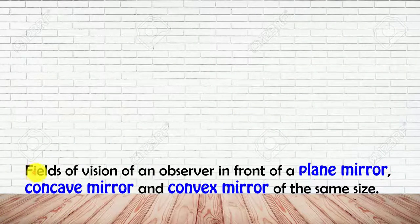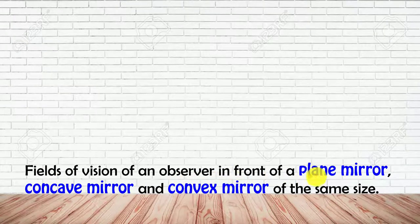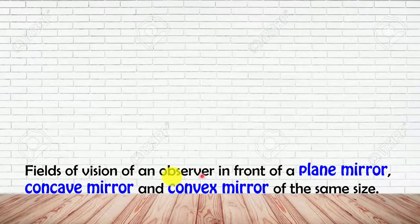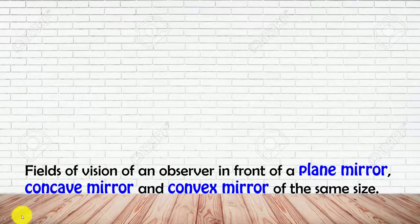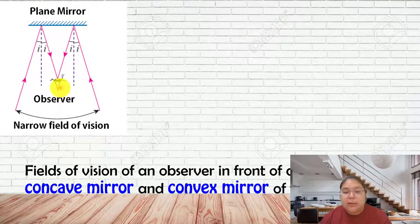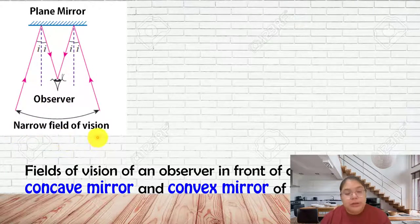Now we need to find out the field of vision of an observer in front of three types of mirrors of the same size: the plane mirror, concave mirror, and convex mirror. For the plane mirror, we find it gives only a narrow field of vision - the angle is fixed, so the wider area you cannot see.